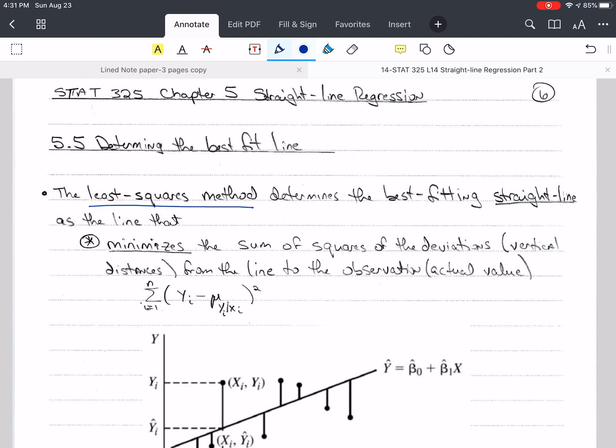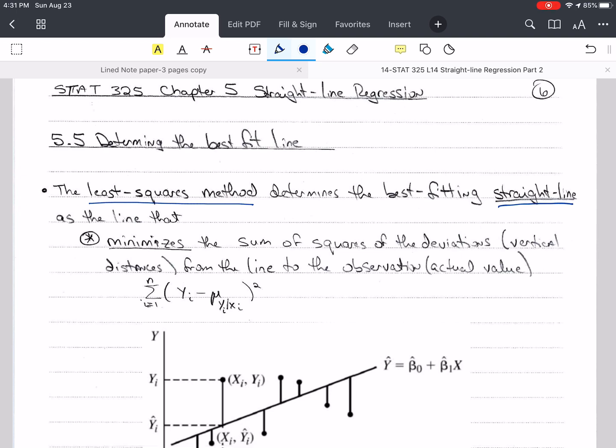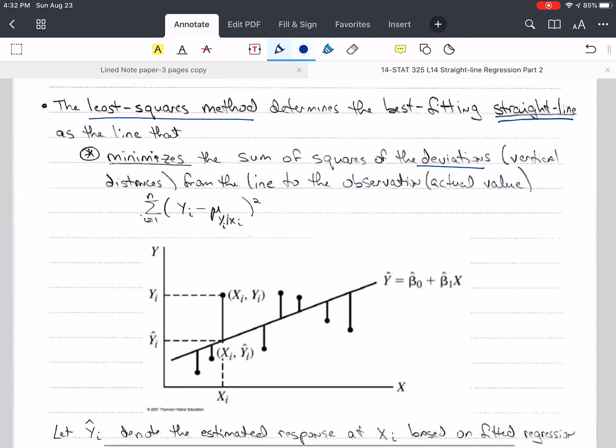This least squares method helps us determine the best straight line, and that line has to minimize the sum of squares of the deviations. These are the vertical distances from the line to the observed or actual value. So the y's are the actual values and the y i hats, they got a little hat on them, those are the fitted or estimated values from our line, from the equation of the line.